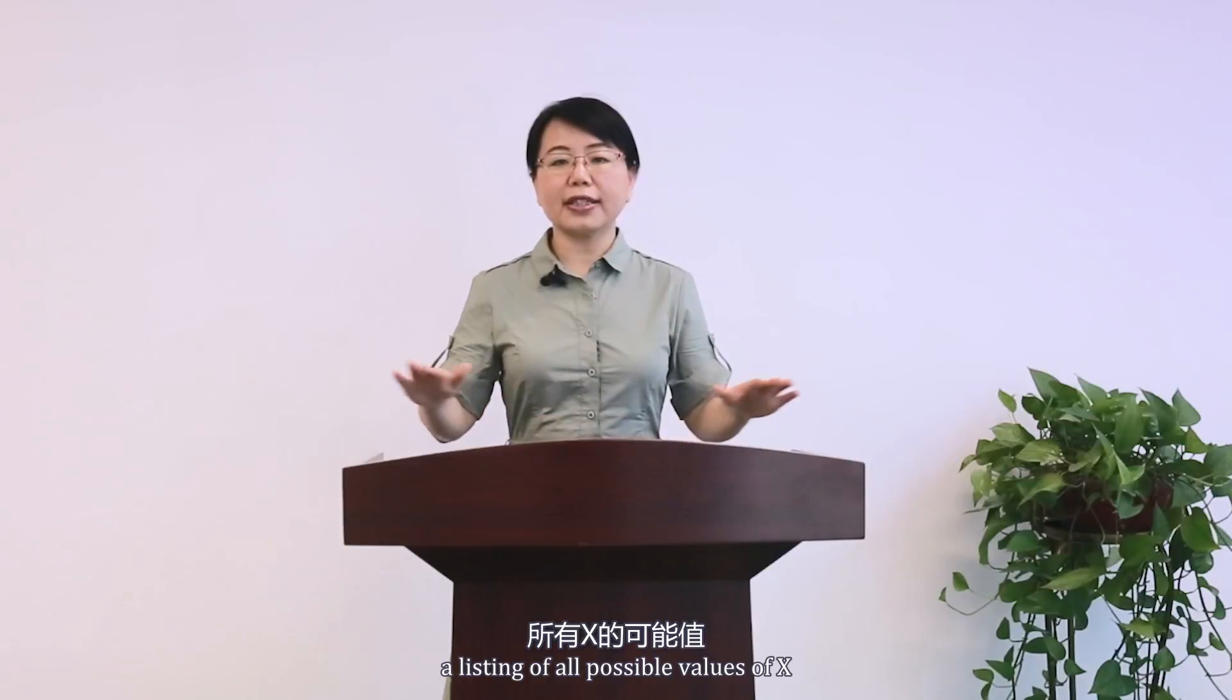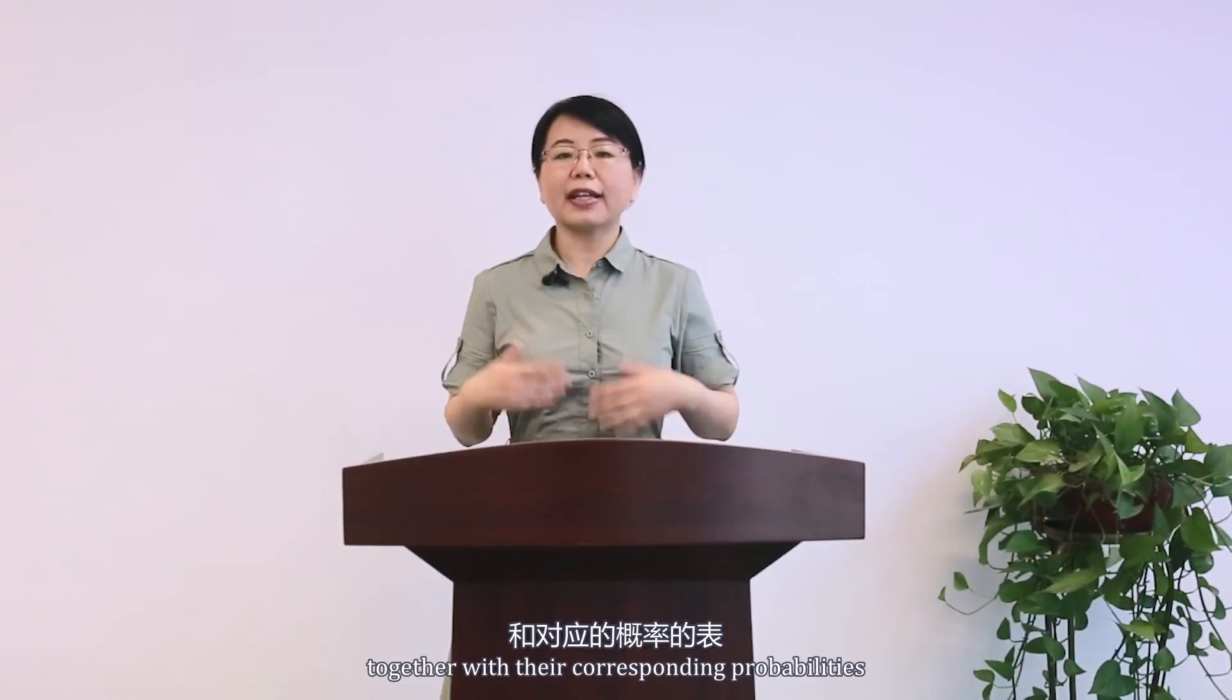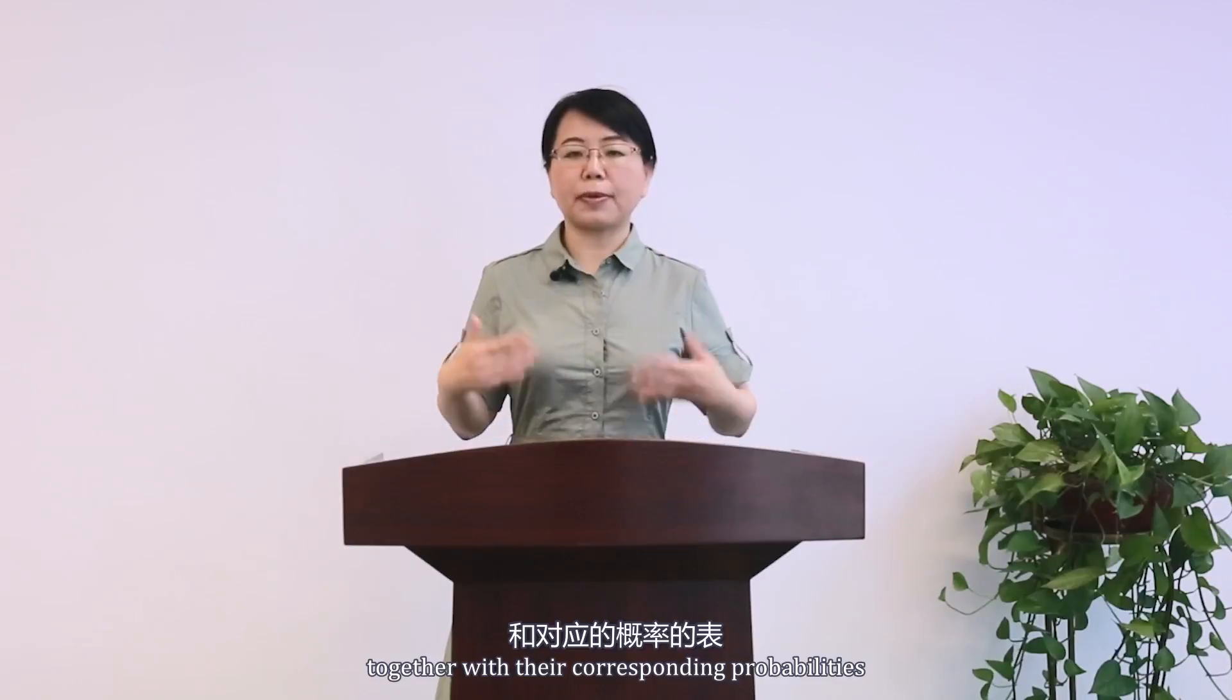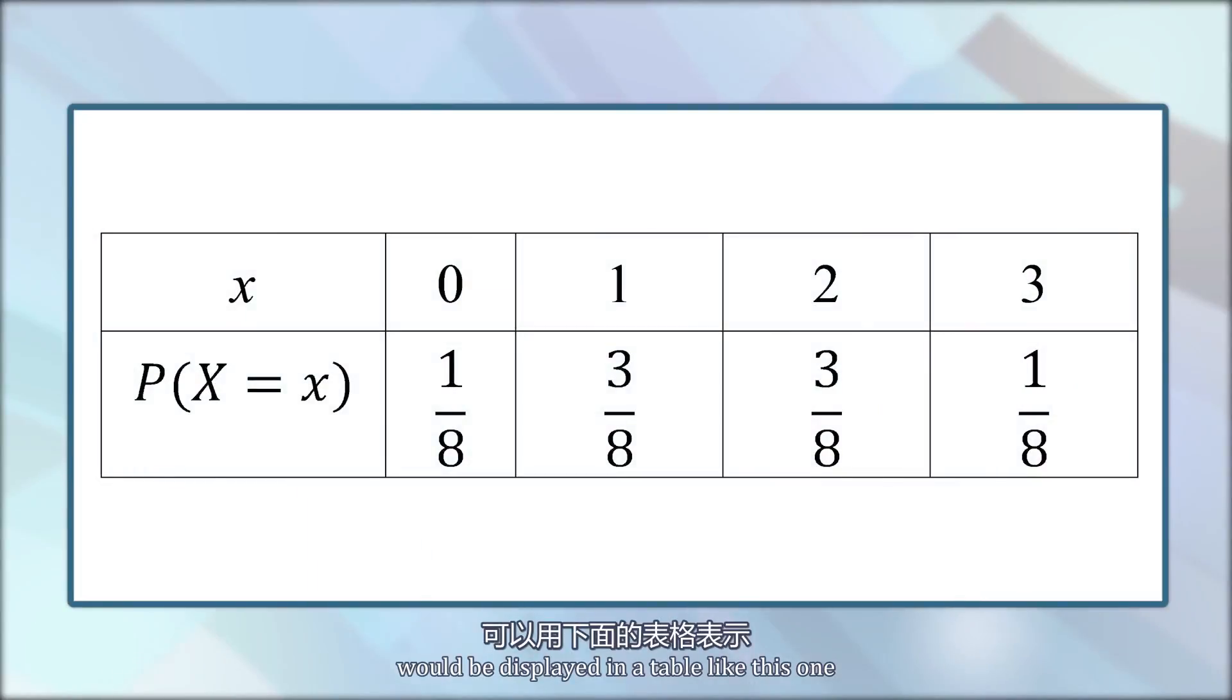The probability distribution of X, that is, a listing of all possible values of X together with their corresponding probabilities, would be displayed in a table like this one. So when X is 0, the probability is 1/8. When X is 1, the probability is 3/8, and so on.